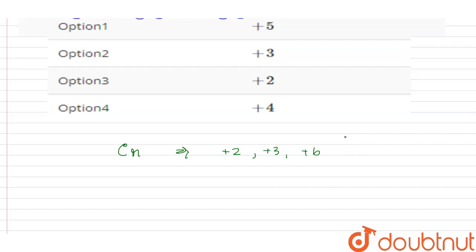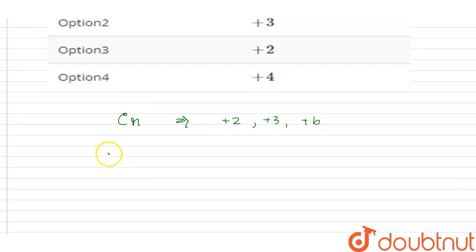In +3 oxidation state, the electronic configuration of chromium becomes... You can see that first of all we will write the electronic configuration for chromium, and we know that it has argon.